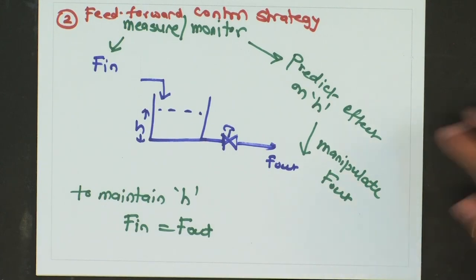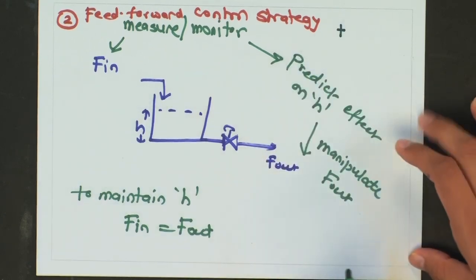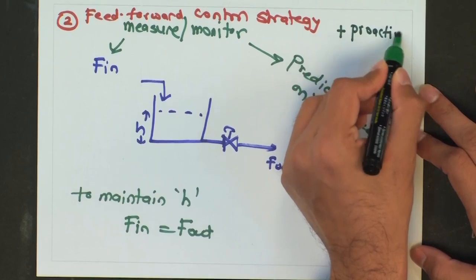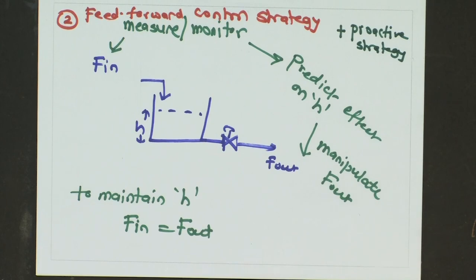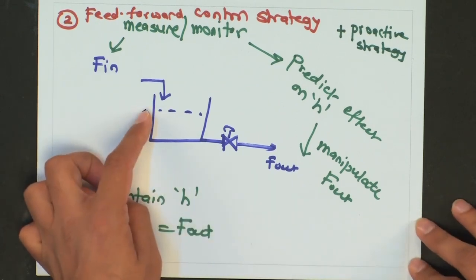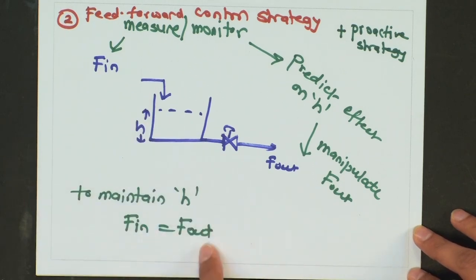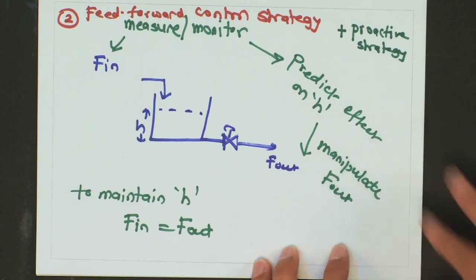Let us now look at the feed forward control strategy and its advantages and disadvantages. The primary advantage of a feed forward strategy is that it is a proactive strategy — in a way it takes care of the limitation of the feedback control strategy. If there is some disturbance, even before that disturbance affects the control variable you are taking a control action. So even if the tank level was almost close to completely full, as soon as the disturbance was detected the outlet flow rate would be maintained equal to the inlet, and the height of the tank would not change from its desired value. It is a proactive control strategy.